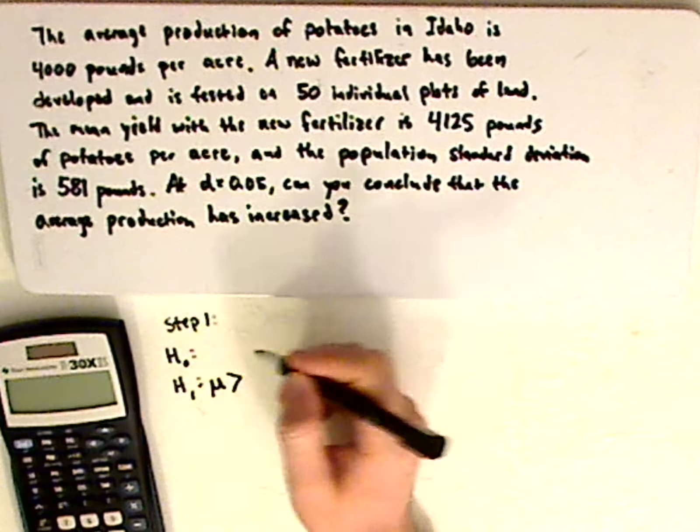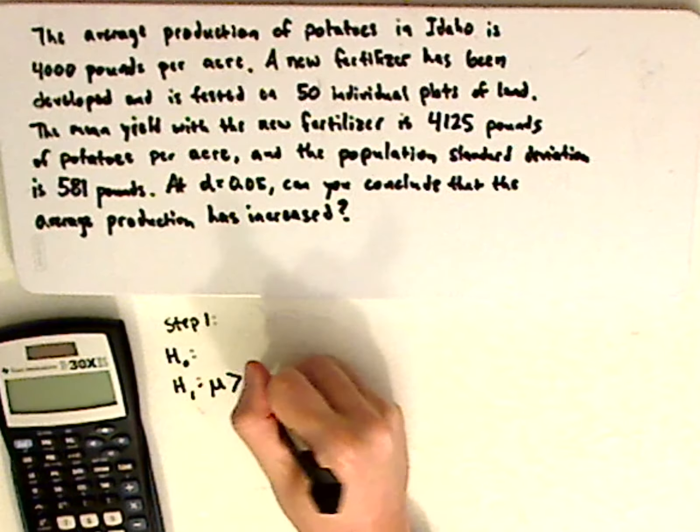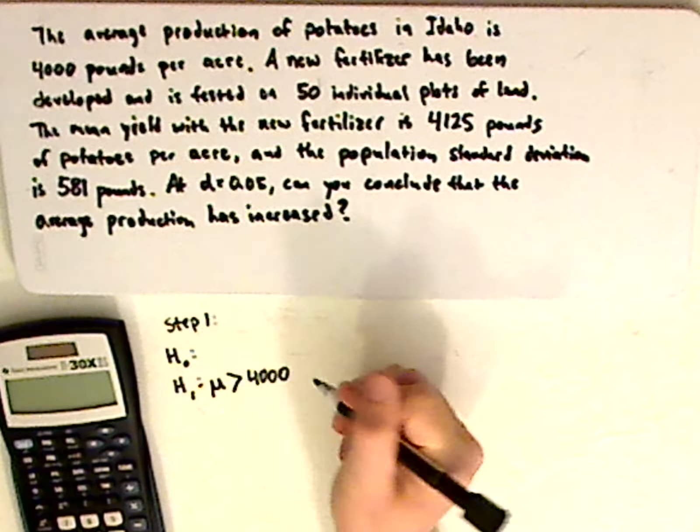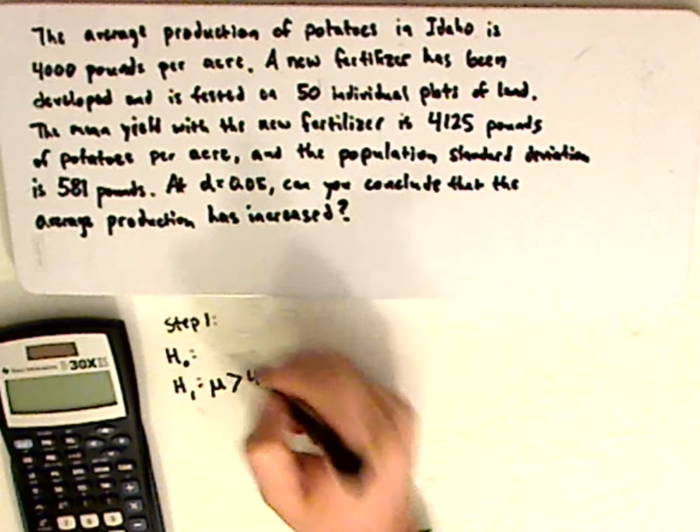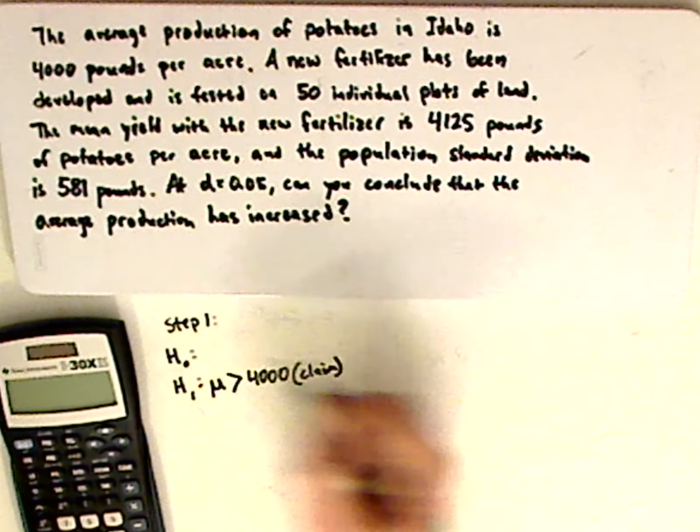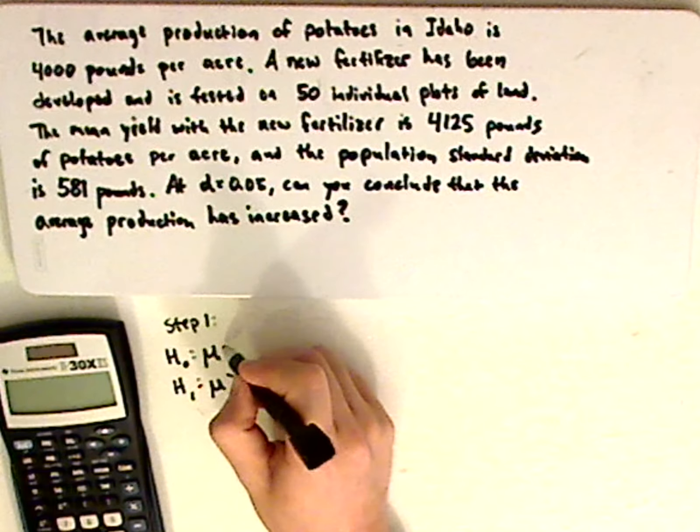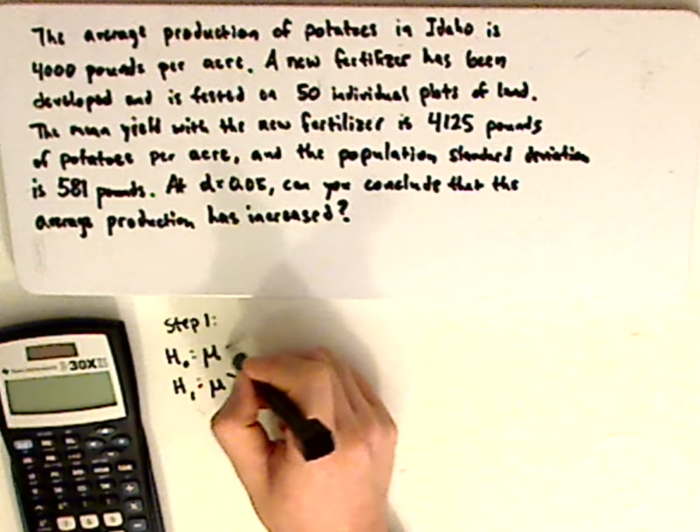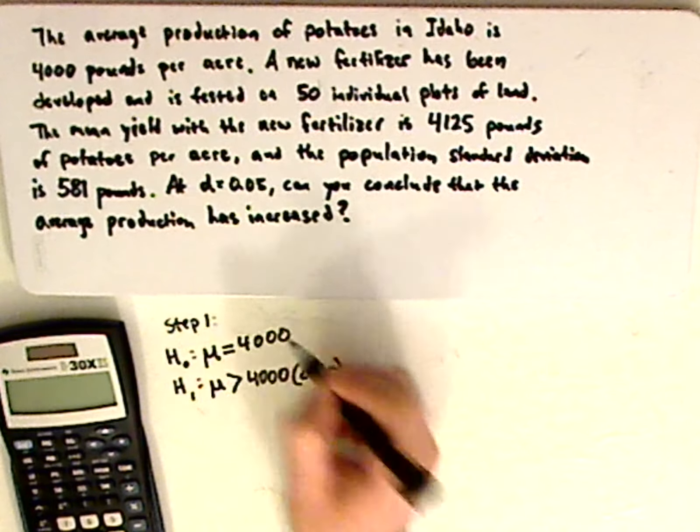because it's increased, that means it's larger than 4,000, 4,000 pounds per acre, which means that this, let me put claim here, that means that this is your null hypothesis equaling 4,000.